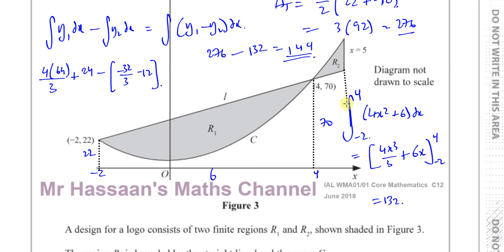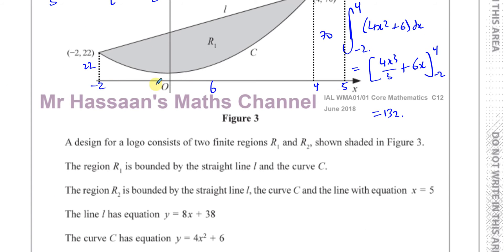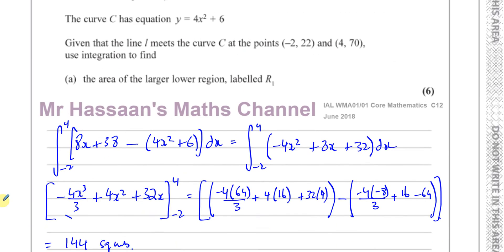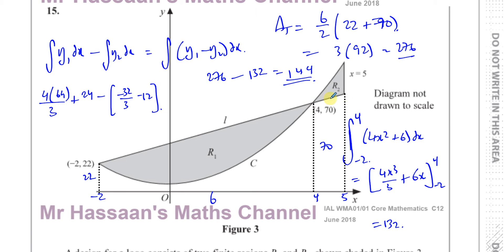We're going to consider the limits for R2. Now the curve is above the line in this region. If I used the same expression as before — line minus curve — I'd get a negative area. So I have two choices: either switch the limits around, putting 4 on top and 5 underneath, which gives a positive area, or use the same integral and take the absolute value. Area is a scalar quantity, so I just make it positive and add it to R1.